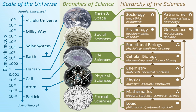The branches of science, also referred to as sciences, are commonly divided into three major groups. Formal sciences: the study of mathematics and logic, which use an a priori, as opposed to factual, methodology.